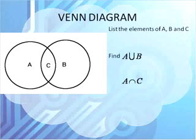Now we're going to look at some Venn diagrams. You can list sets as Venn diagrams as well. If we're looking at a Venn diagram and we see these numbers, the first thing that we're going to do is list the elements of A, B, and C.